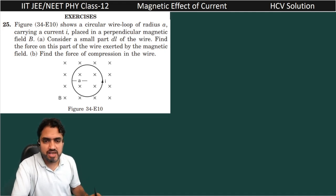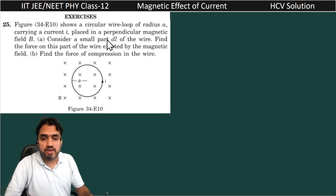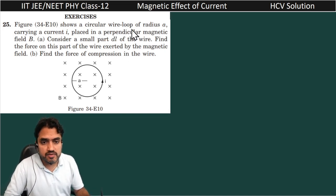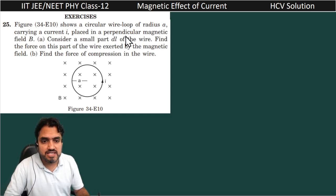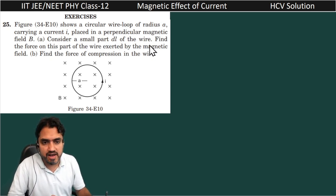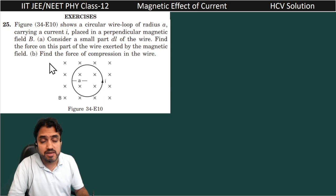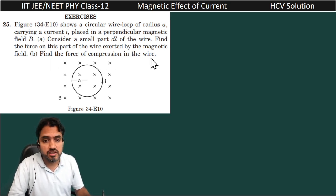Hello my dear students, now we are having the next question. Question number 25: a figure shows a circular wire loop of radius a carrying current i and placed in a perpendicular magnetic field b. The first part asks us to consider a small part dl of the wire and find the force on this part exerted by the magnetic field. The second part asks us to find the force of compression in the wire.